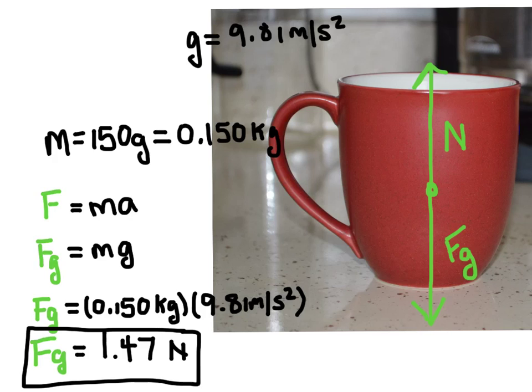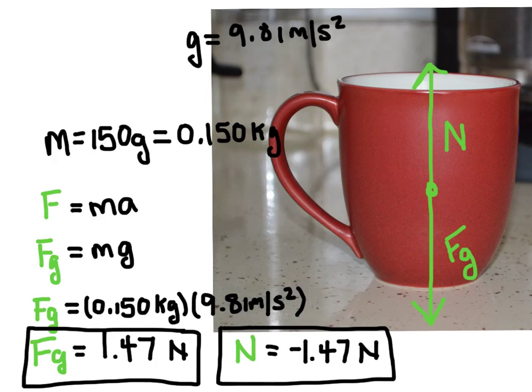Now the normal force would be exactly equal and opposite to the force of gravity. So I could say that the normal force would be equal to negative 1.47 newtons. And so the negative would indicate that it's in the opposite direction. Now if I were to add these two together, I would get the net force. And so the net force would be zero.